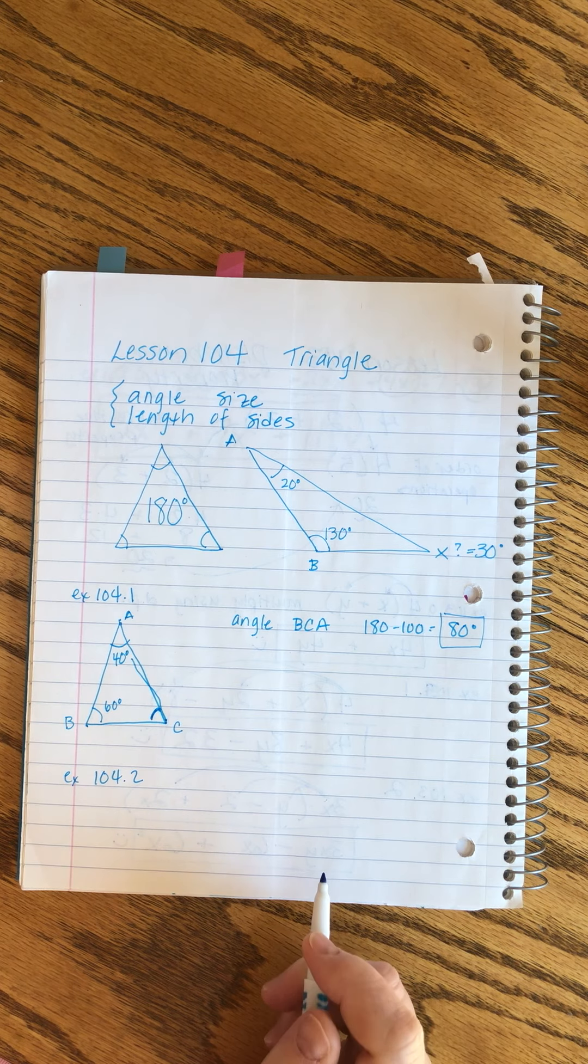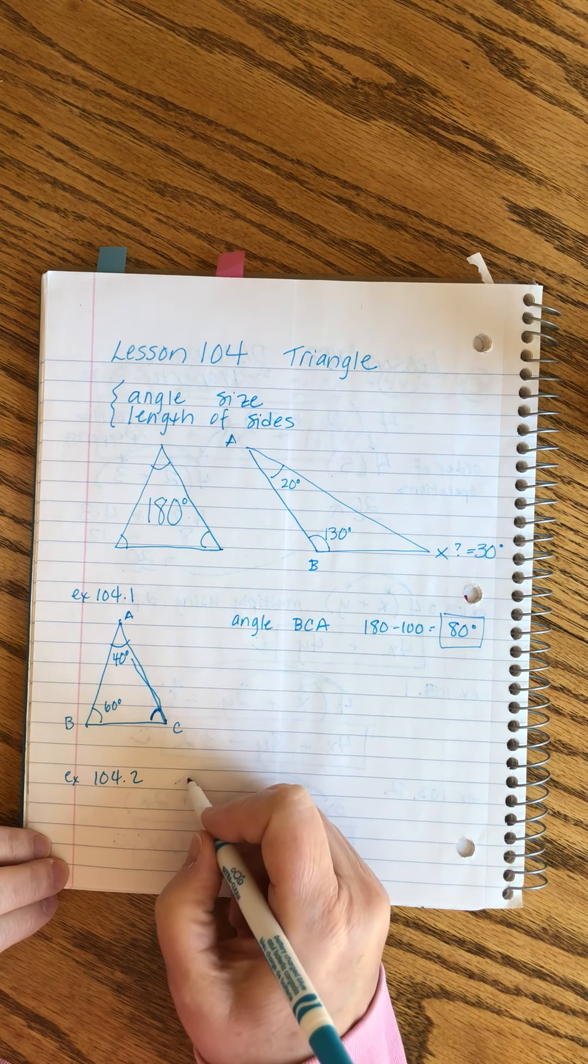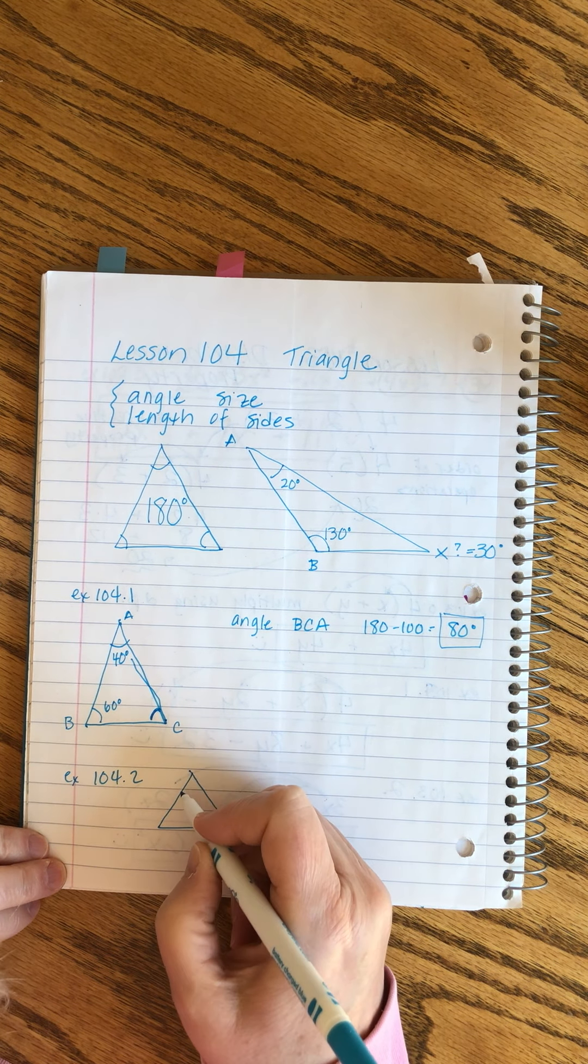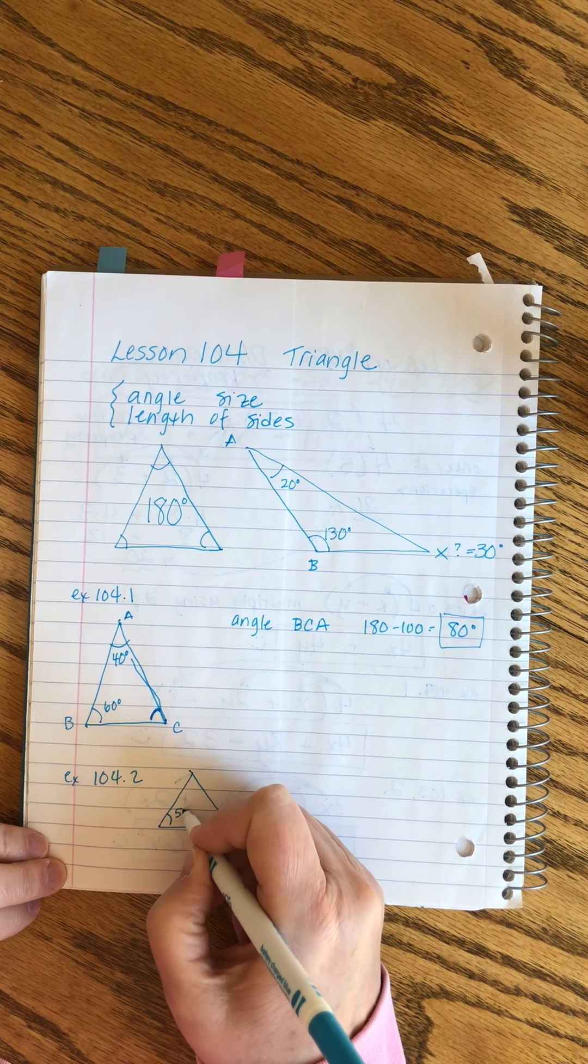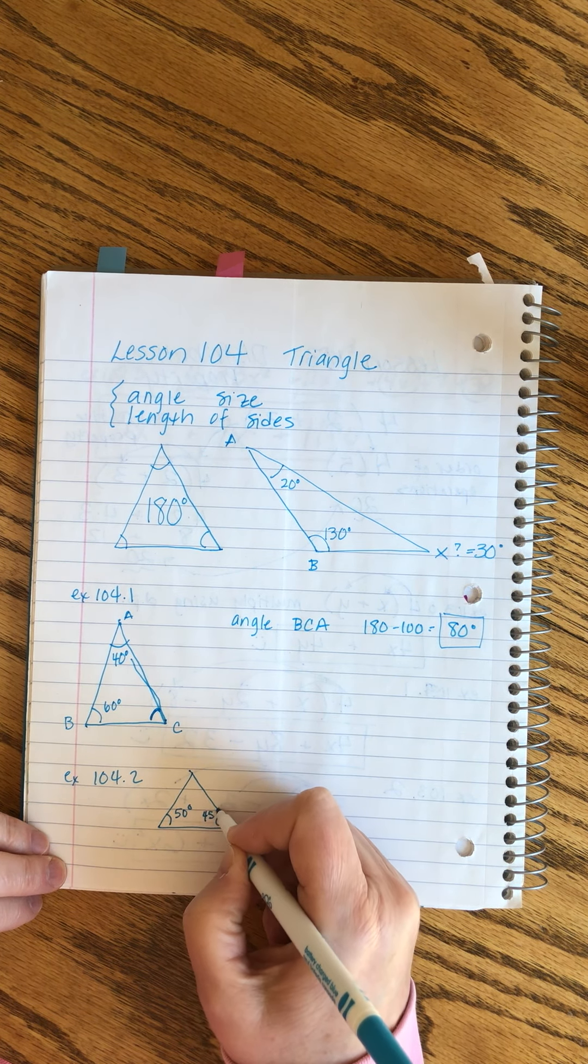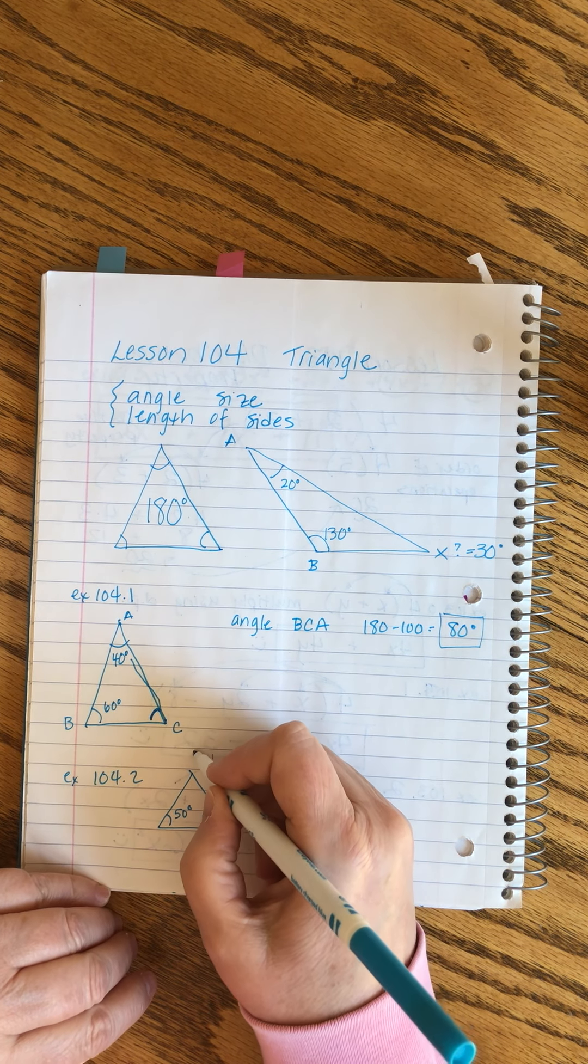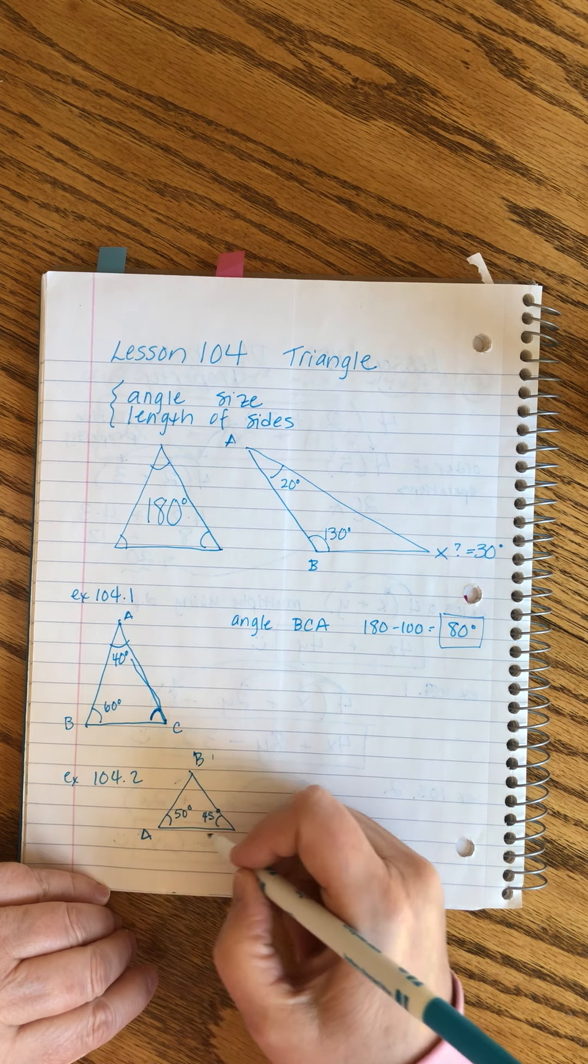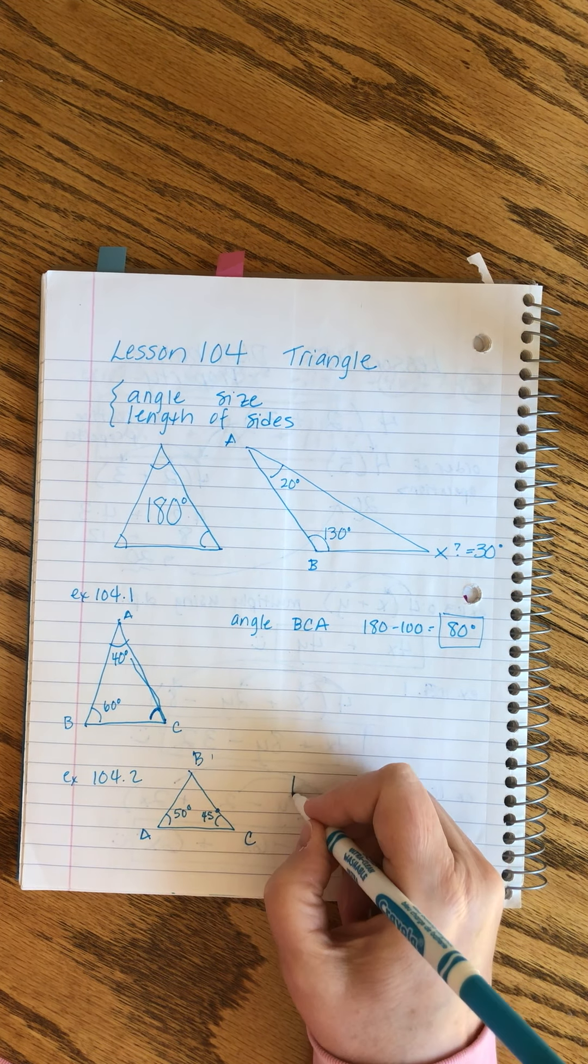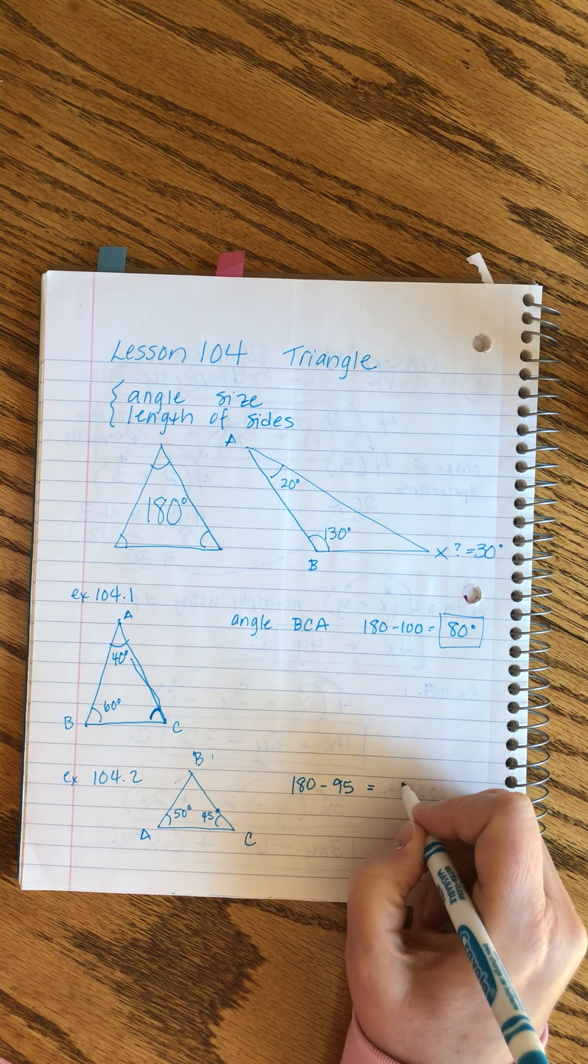Let's try another. What is the measure of angle B? Here we have 50 and 45. Those add up to 95, so it's 180 minus 95, which would be 85 degrees for angle B.